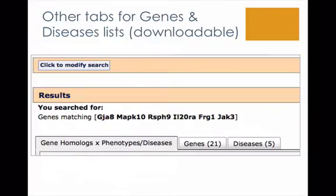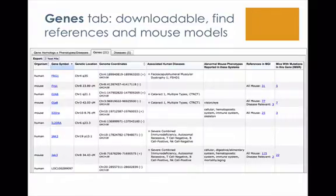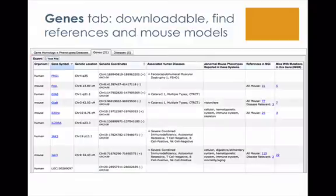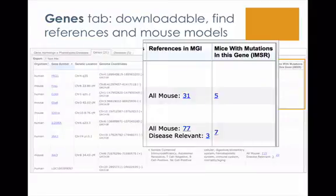Alongside the grid, there are gene and disease tabs. The gene tab is a downloadable file that allows you to find references in mouse models. Both human and mouse are reported as separate rows. References in MGI provide a quick link, and disease-relevant references are also provided — these are publications that specifically report use of mutant mice as disease models for a human condition.